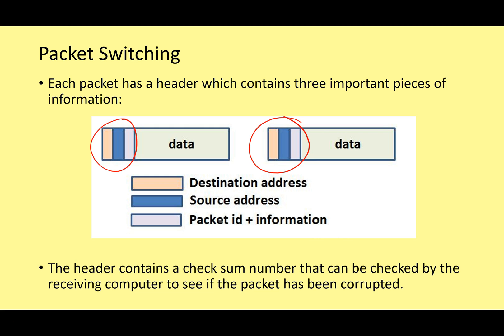Basically, you perform a mathematical calculation on the data — which is just ones and zeros. If the result of this calculation is the same as the checksum in the header information, then you can be certain the data has been received uncorrupted. If the checksum doesn't match, then the data needs to be resent.